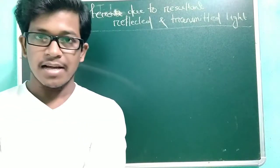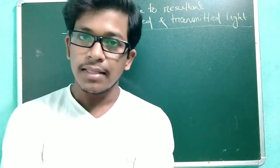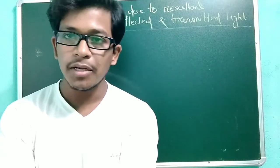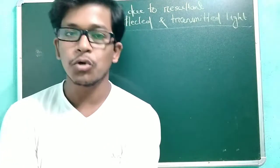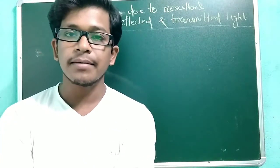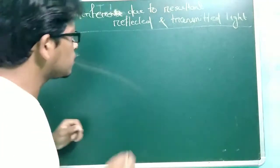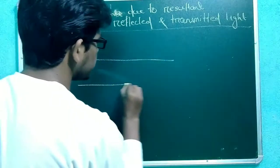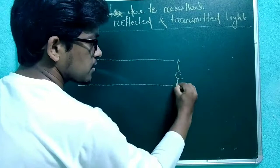Hello my dear friends. In the last class we were studying about the interference in the case of a thin parallel film, where amplitude splitting was happening. In this class we will get the interference due to the same thing — the thin parallel film. But here we will calculate the interference due to the reflected wave and transmitted wave, as I drew in the last class. Suppose I have two thin parallel films having width E.